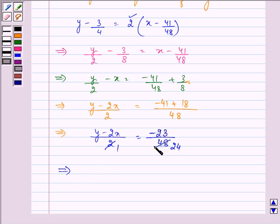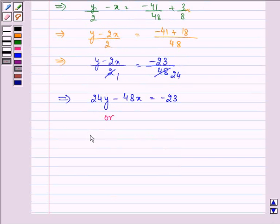we have, and on cross multiplying it is 24y minus 48x equal to minus 23, or on rewriting it we have 48x minus 24y equal to 23. This is the required equation of the tangent